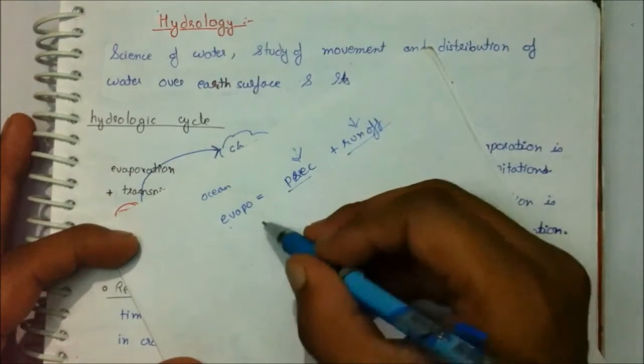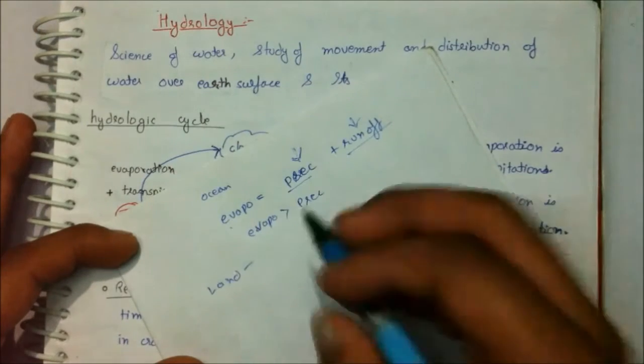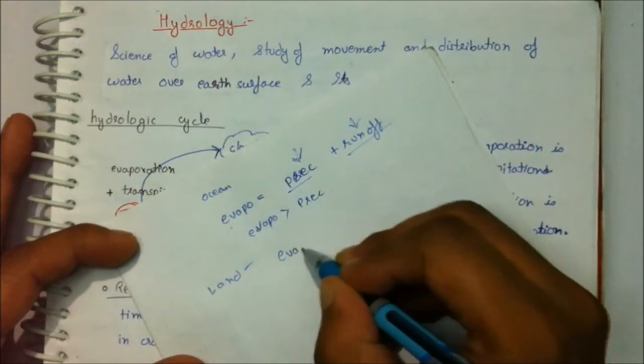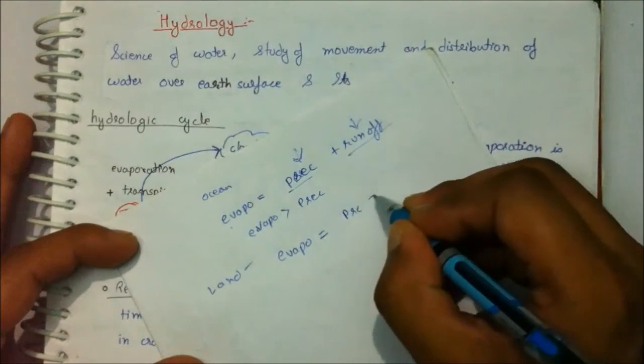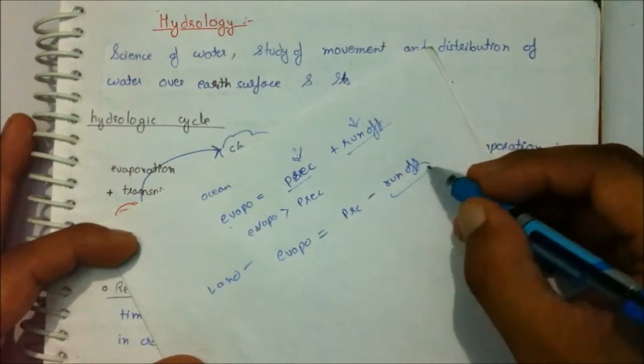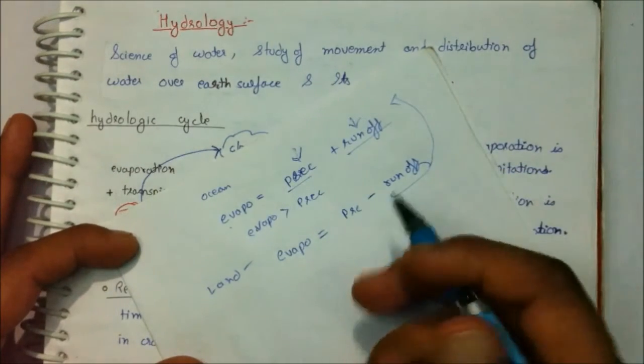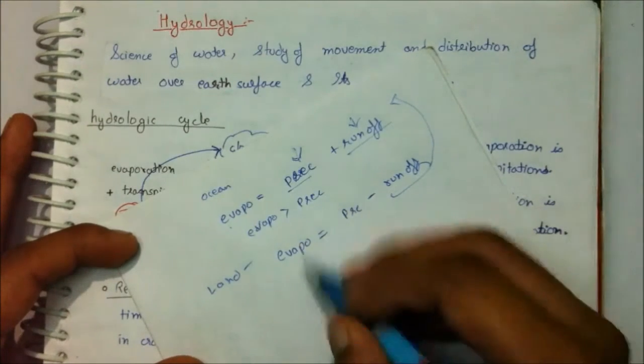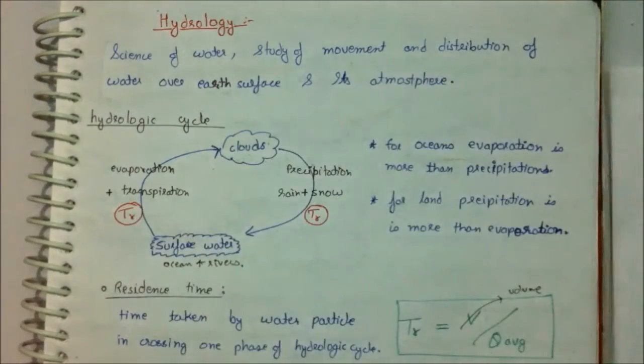In land, we have evaporation is always equal to precipitation minus runoff, because runoff water goes into rivers and which ultimately goes into the oceans. So runoff is not calculated as the inlet water of the land. So evaporation is always less than precipitation.